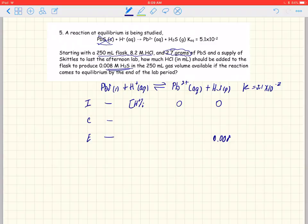So let's not work from left to right, but let's work from right to left. This H2S here must go up by X to produce 0.008. So that's our X.